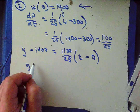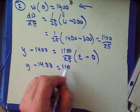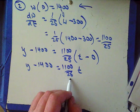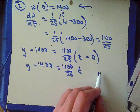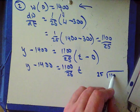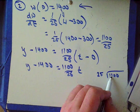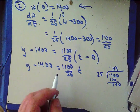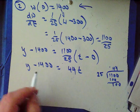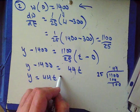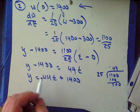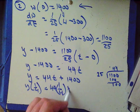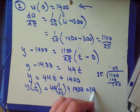So y minus 1400 equals 1100/25 times t. Let's check: 1100 divided by 25 is 44. So W equals 44t plus 1400. We want to know y at one-fourth — that's 44 times one-fourth plus 1400, which is 1411 tons. That's part a.